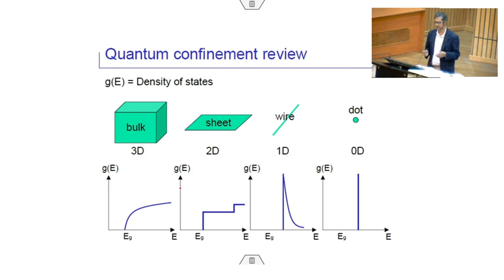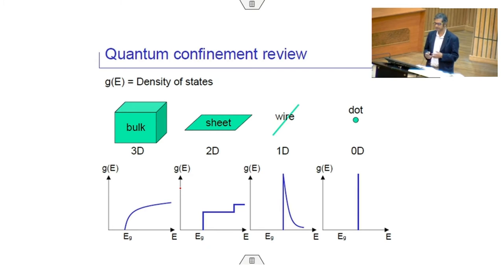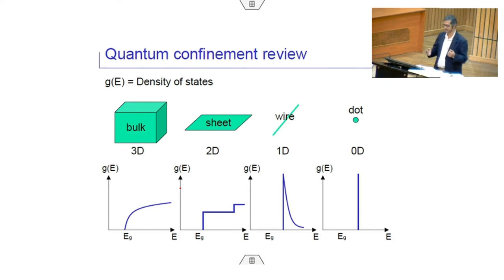It is also important to consider what kind of contacts the nanomaterial makes. For 3D or 2D nanomaterials, ohmic contacts apply, but for 0D and 1D nanomaterials, conduction from the contact to the material is governed by electron tunnelling. Tunnelling means electrons can pass through a potential energy barrier higher than their kinetic energy — this is also utilized in scanning tunnelling microscopes.